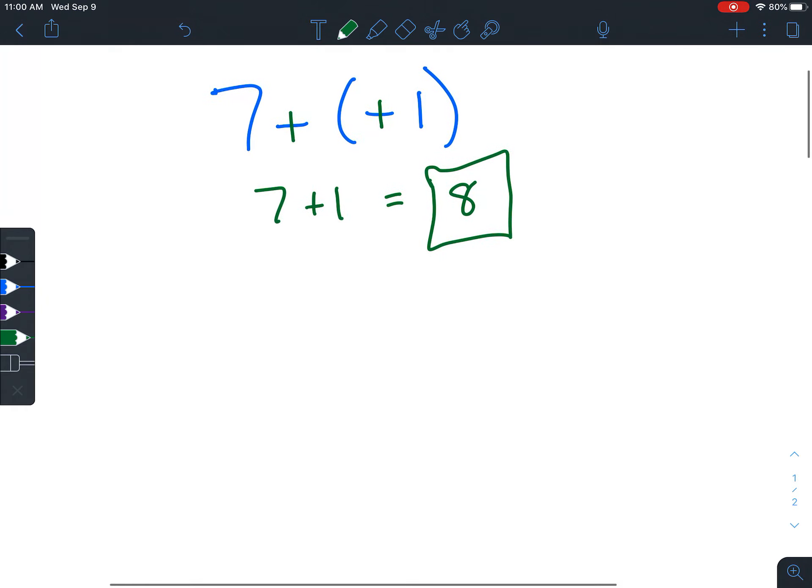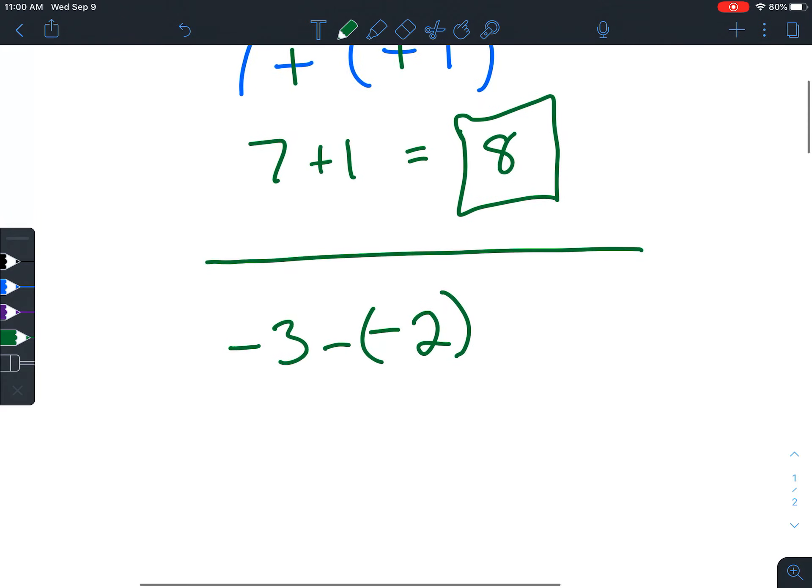Let's maybe practice that one more time. So for instance, if we had something such as negative 3 minus negative 2, you'd probably see parentheses like that. Then you would change it to add the opposite, and if it helps rewrite it like that.